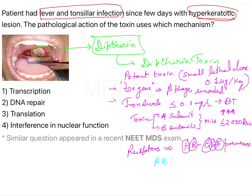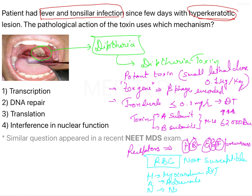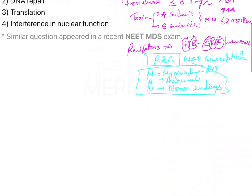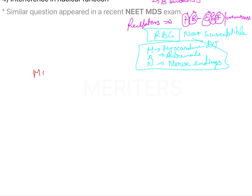An important exception: RBCs are not susceptible to the action of diphtheria toxin. The toxin shows highest affinity for MAN — M for myocardium, A for adrenals, and N for nerve endings.